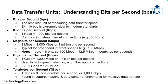A megabit per second is 1000 kilobits per second, or 1 million bits per second. Most broadband internet speeds are measured in megabits per second today, like 100 or 200 megabits per second. A common misconception is to confuse megabits per second with megabytes per second — remember, one byte equals eight bits, so if your internet is 100 megabits per second, your download speed is roughly 12.5 megabytes per second. A gigabit per second is 1000 megabits per second, or one billion bits per second. Gigabit speeds are often associated with fiber optic internet connections and are standard for high-speed networks such as data center connections or enterprise-level networking.